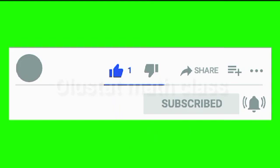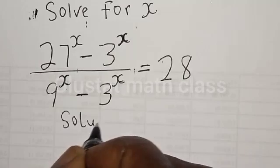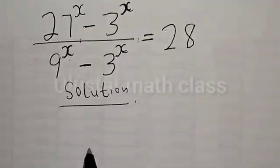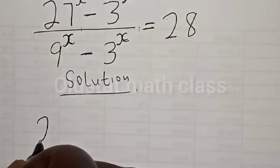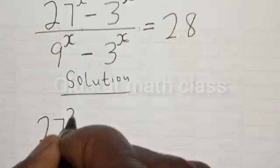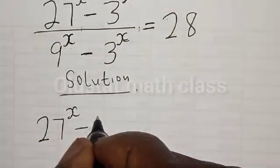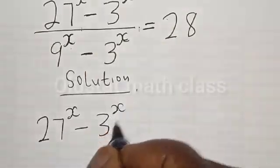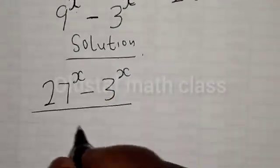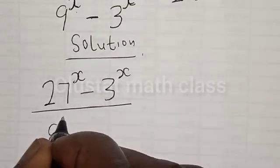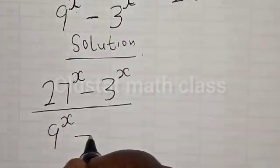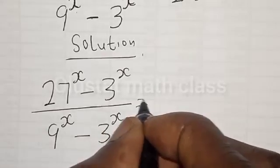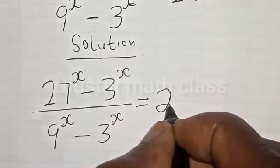Solution. We have the given equation: 27 raised to power s minus 3 raised to power s, divided by 9 raised to power s minus 3 raised to power s, is equal to 28.